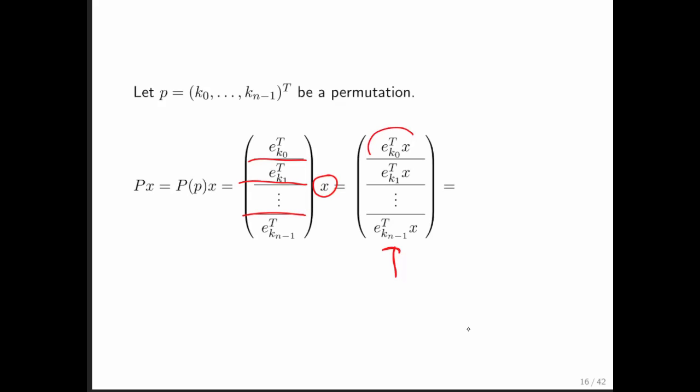But notice that this right here we saw in a previous homework exercise simply picks out the indicated component of vector x and so forth. So what you get is the vector with its components reshuffled in the order indicated by our permutation vector.